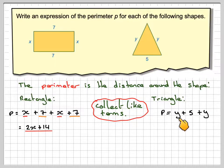And then we're going to have Y plus Y, which makes 2Y, and then plus 5. So again, if I know the value of Y, I can find the perimeter of the shape.